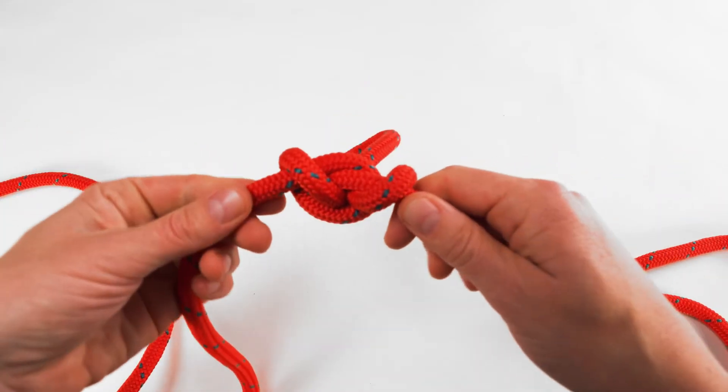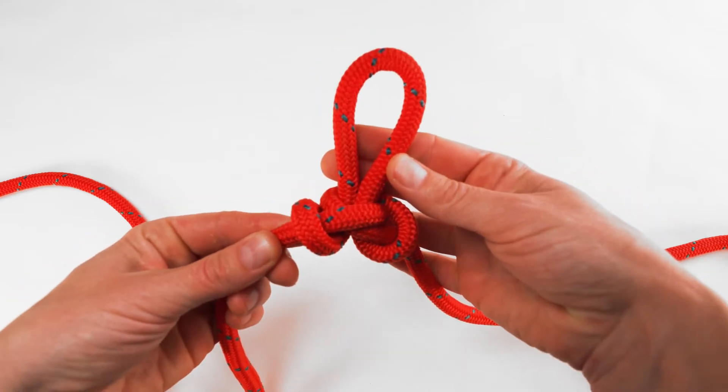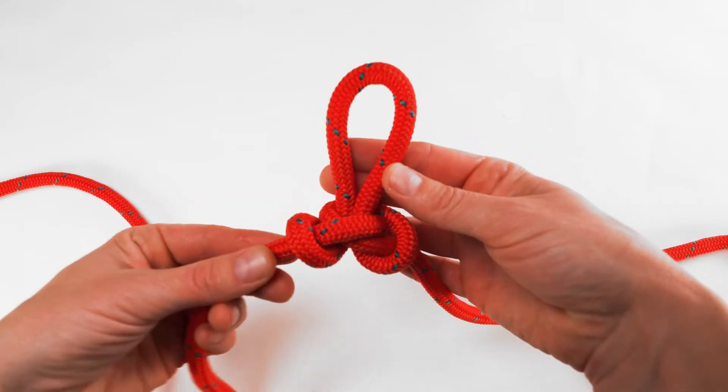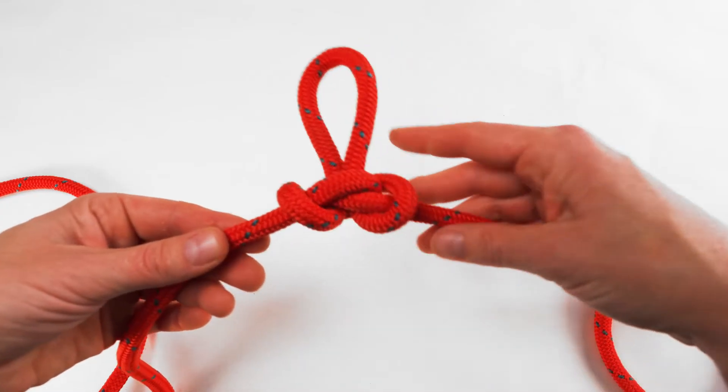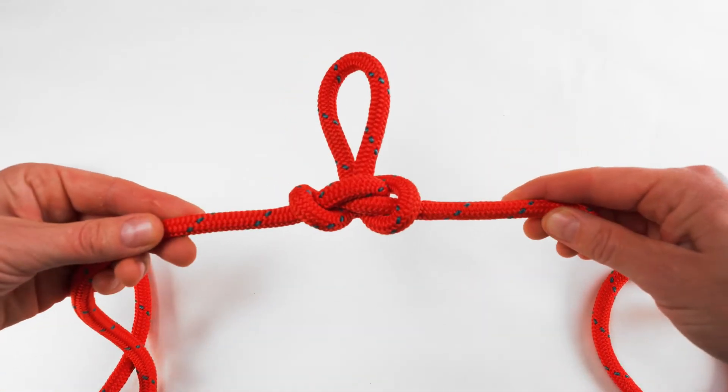This knot creates a loop in the middle of the rope that can be loaded in multiple directions. It can also be used to isolate a damaged section of rope.